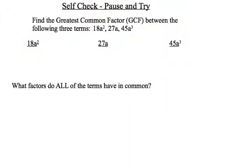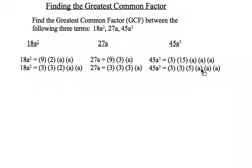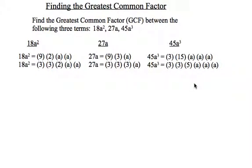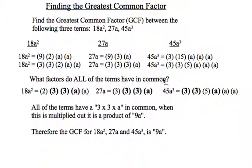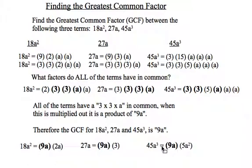So at this point in time, you may wish to pause the video again and try this one on your own. And then I will post the solutions momentarily. All right, here we go. Breaking those three terms down into their lowest or prime factor form. Determining what they have in common. So in this case, they have two 3s in common and 1 a. When I multiply that out, I get a product of 9a. Therefore, the greatest common factor for those three original terms is 9a. And I can see that here.